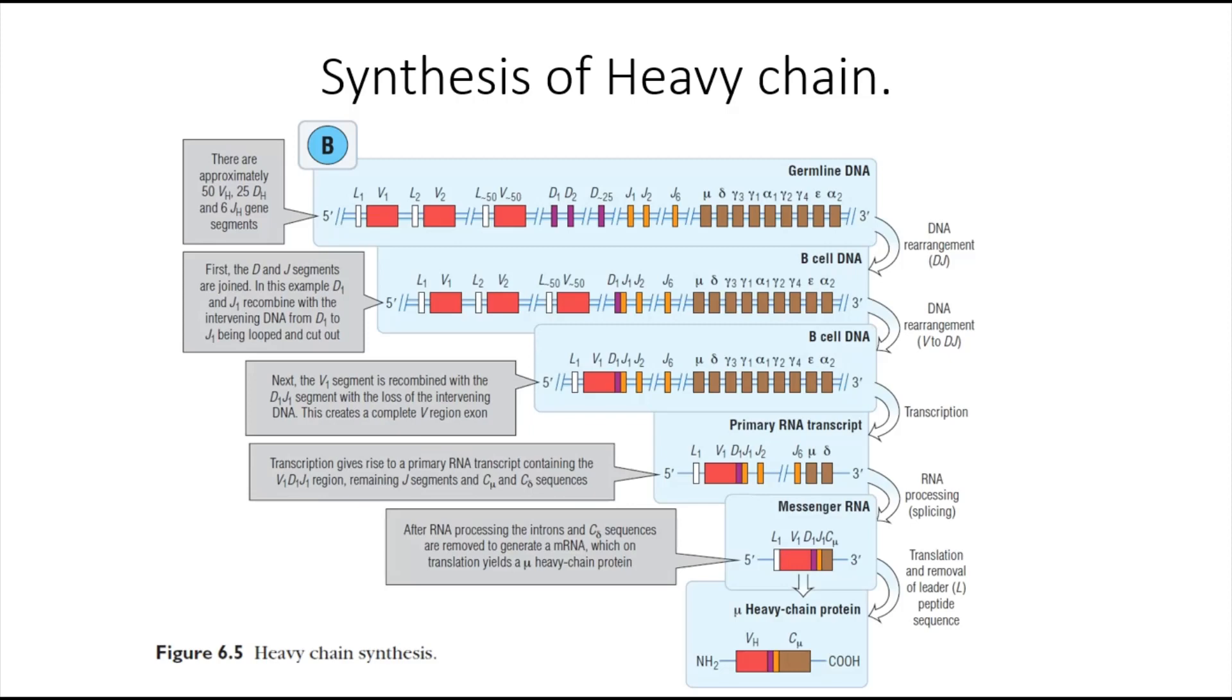This produces, in this example, a mu heavy chain protein, which will be joined later with the light chain protein to produce a functional antibody.